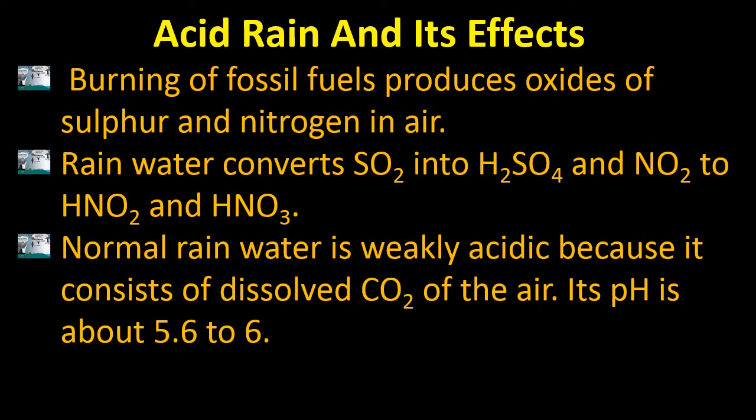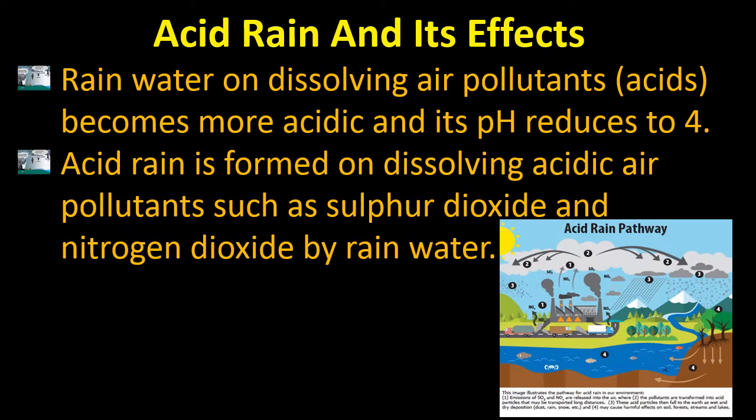Normal rain water is weakly acidic because it consists of dissolved carbon dioxide, which changes into carbonic acid. Its pH is about 5.6 to 6, and it does not have harmful effects on buildings and humans. However, the oxides of sulfur and nitrogen are quite harmful. In a nutshell, rain water dissolving air pollutants becomes more acidic, and its pH reduces to 4.